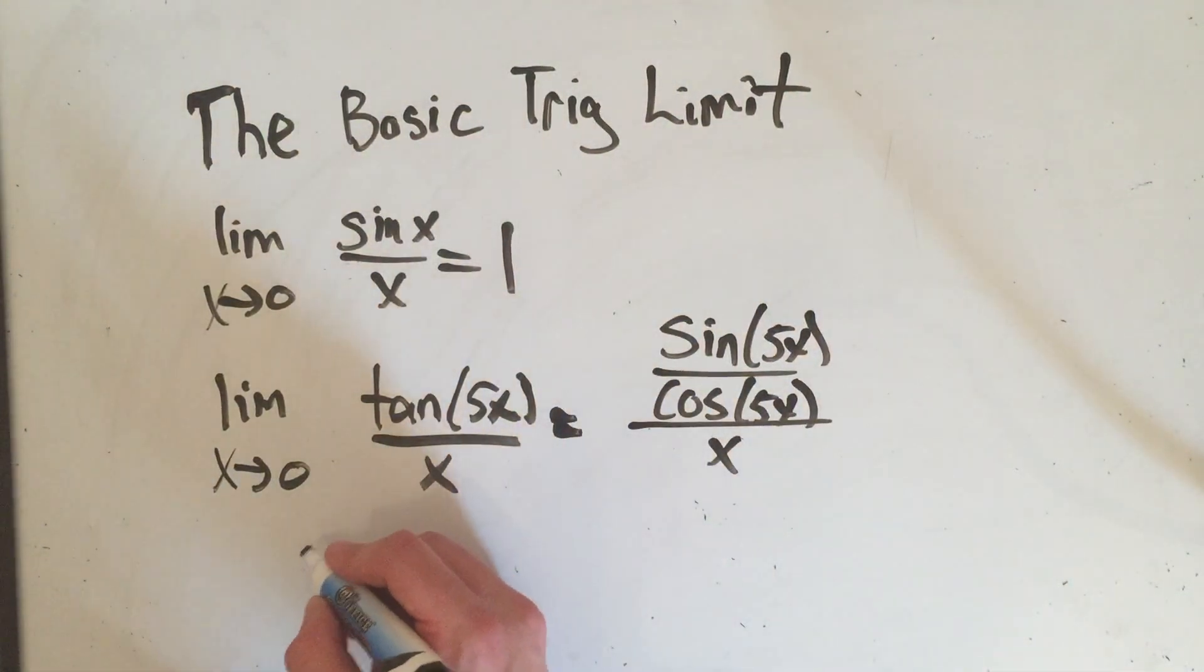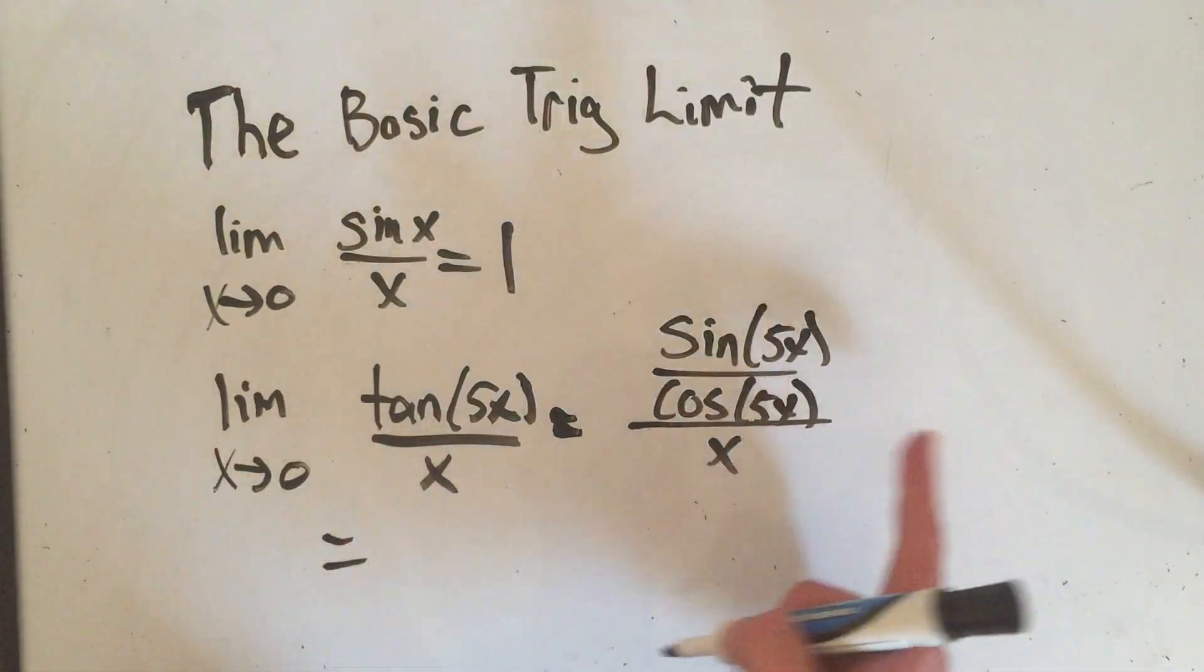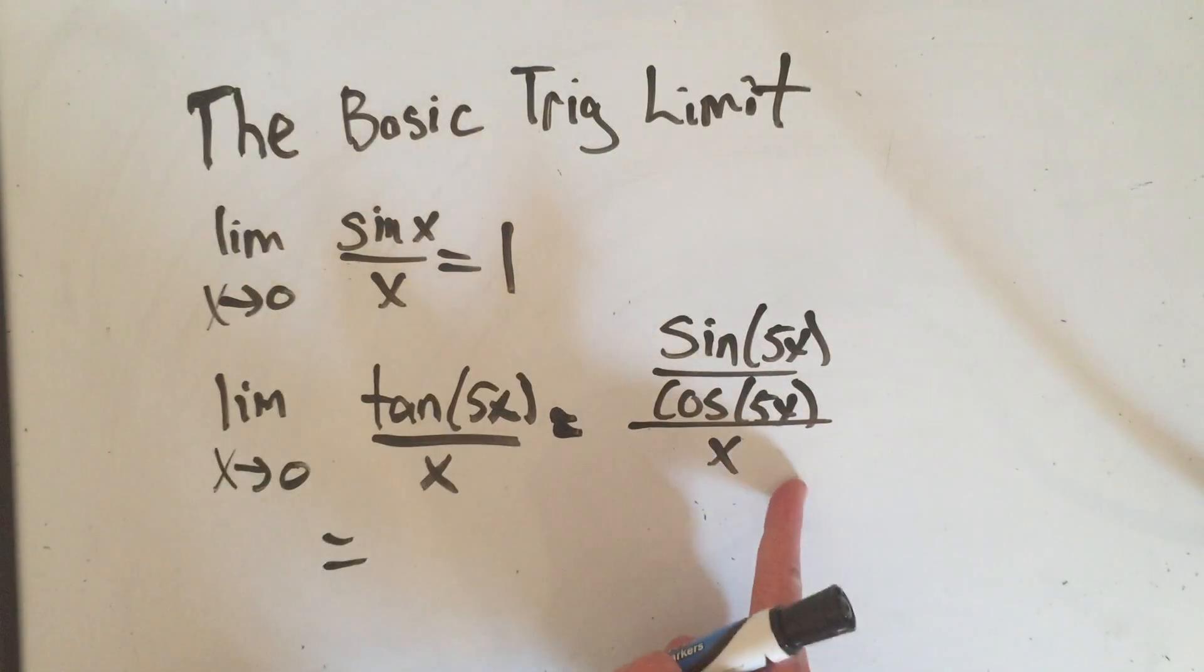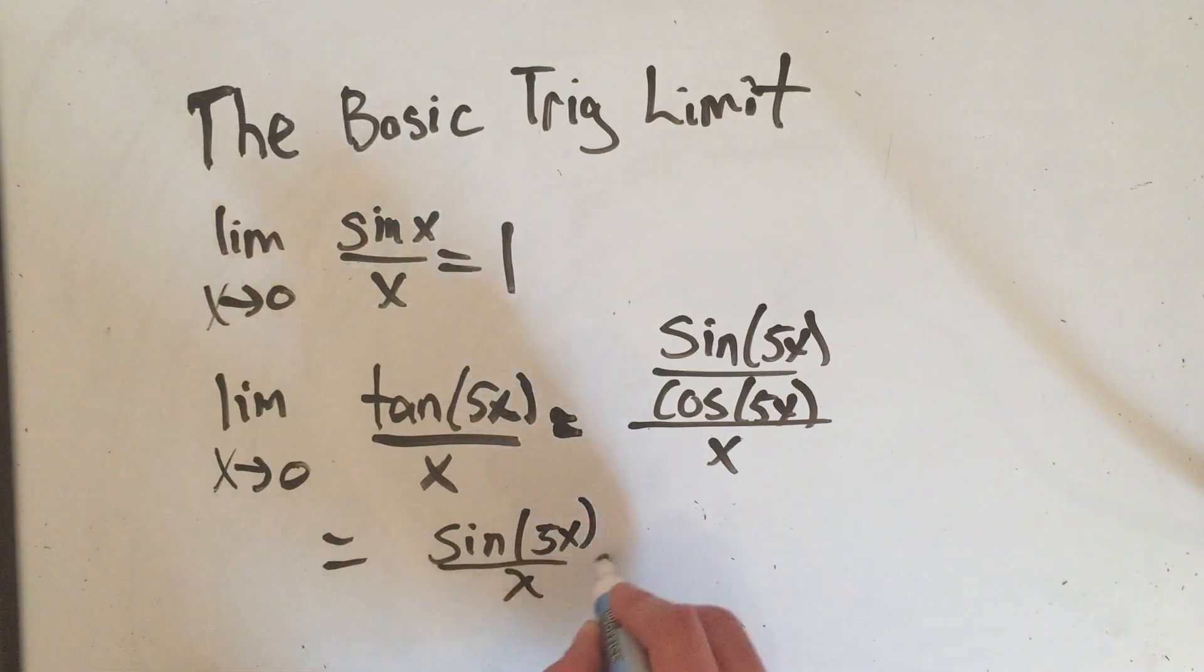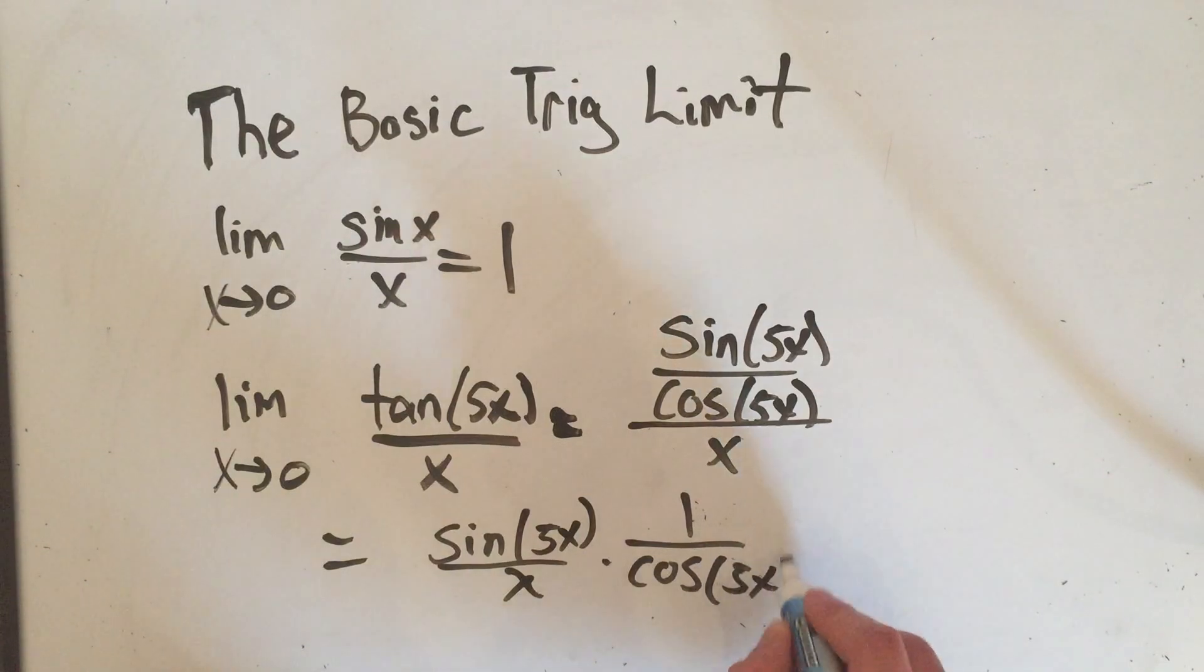And here's how I like to do it. I like to split this all up. So this quantity is the same as writing sine of 5x over x times 1 over cosine of 5x. If you agree with me that this here is just a fancy way of writing that, then we'll be in business.